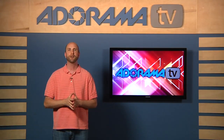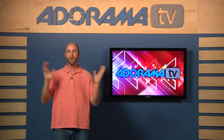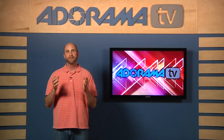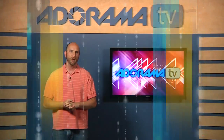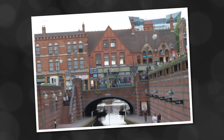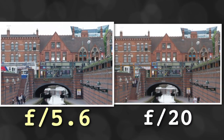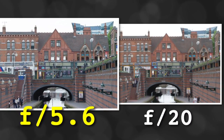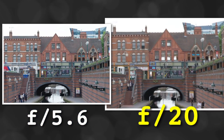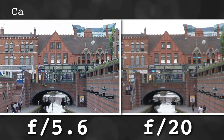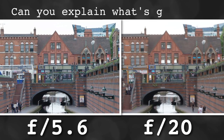Please forgive me if I pronounce your name wrong — we have questions from all over the world. The first question is from Koshik, who said: I took two landscape shots, one at F20 and the other at F5.6, and to my surprise the picture at F5.6 looks sharper than the F20 photo. I focused on the bridge in both cases. Can you explain what's going on?